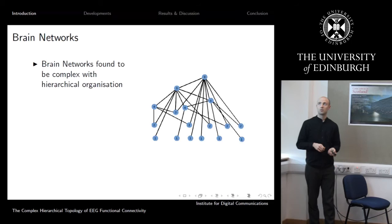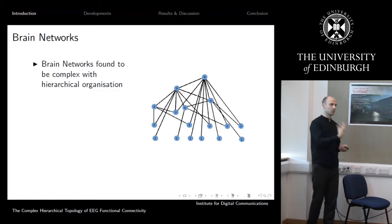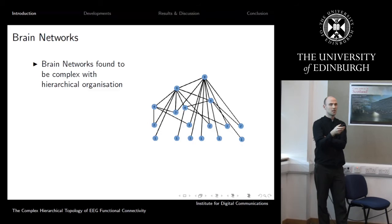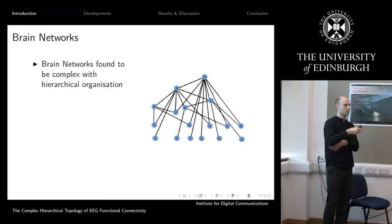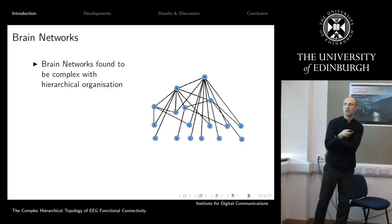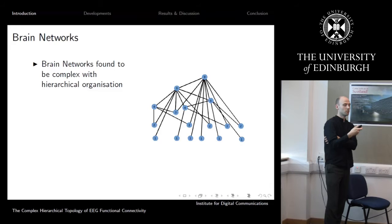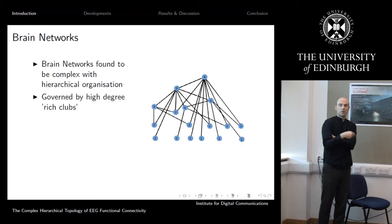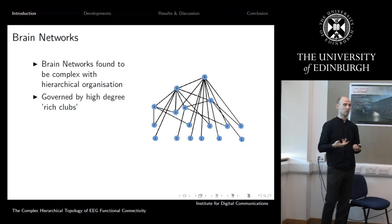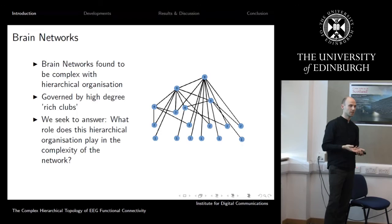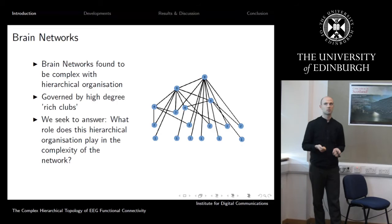One of the main findings when people look at brain networks is that the topology is very complex. There is high modularity — the brain decomposes into different modules of activity — and also a hierarchical organization where certain nodes appear more important than others. High degree nodes tend to cluster together, forming what is called a rich club of activity. We seek to explain what role this hierarchical structure plays in the complexity of brain networks, and we develop a model and a metric to analyze this.